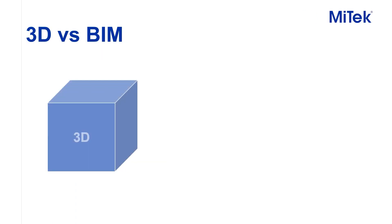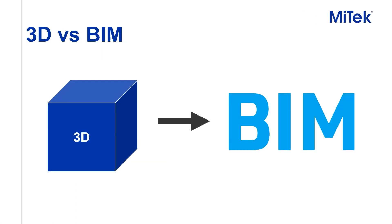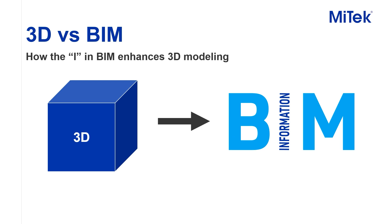A lot of people use the term BIM, but really all they're doing is 3D modeling. We wanted to explore the additional benefits of BIM as we move into it. When we talk BIM, what does BIM do that 3D design doesn't provide? 3D gives you massing — the ability to understand how things are connecting, whether they're collaborating or colliding. BIM really adds the informational value.